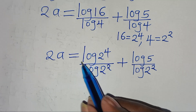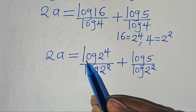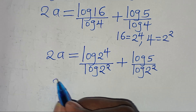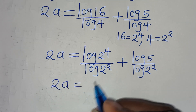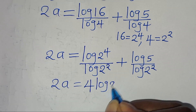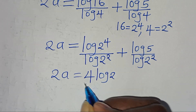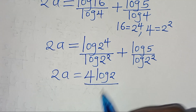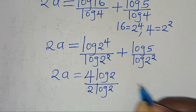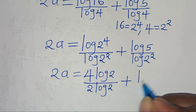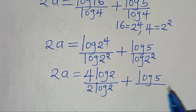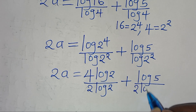Applying the power rule of logarithm, log(2 to the power of 4) becomes 4·log 2 and log(2 to the power of 2) becomes 2·log 2. So we have 2a equals 4·log 2 divided by 2·log 2, plus log 5 divided by 2·log 2.